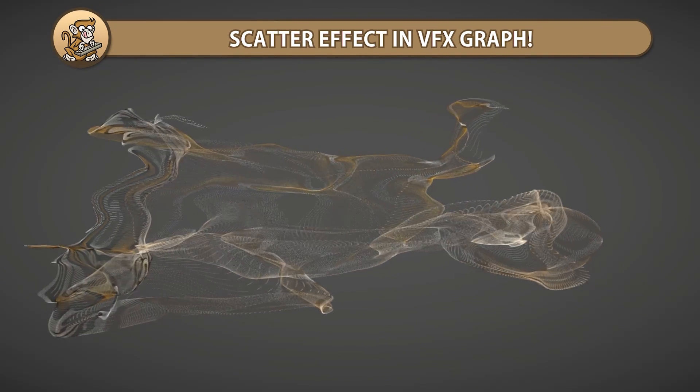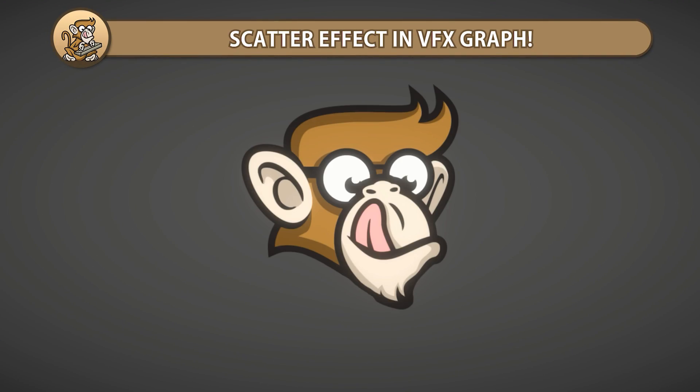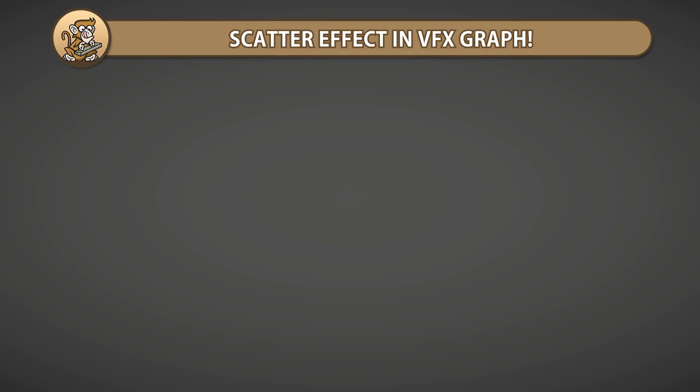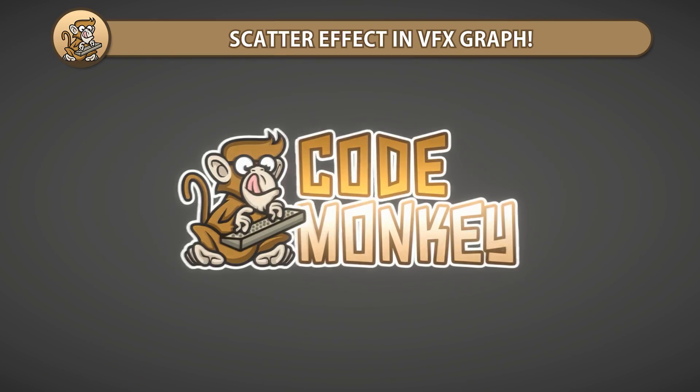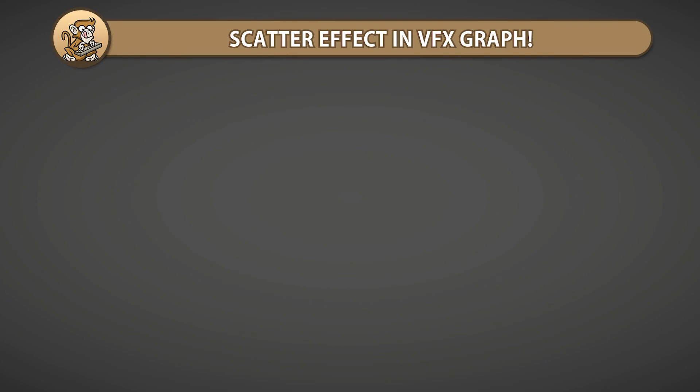In this video we're going to make a nice simple scatter effect using the visual effect graph. We're going to take an image and convert it into a million particles and then scatter them. Let's begin!